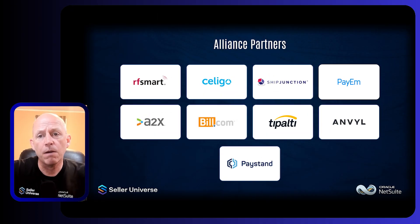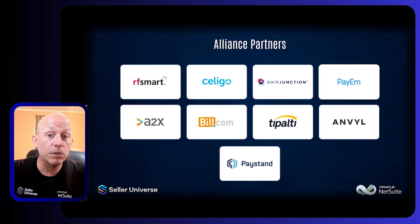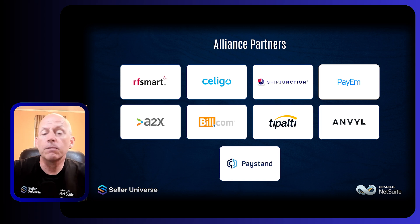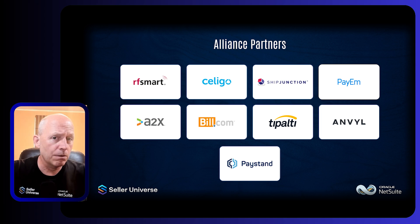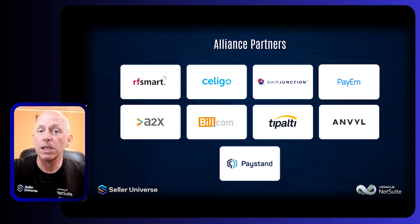Now that we've talked about the various types of integrations — whether one-directional or bi-directional data exchanges — and what Seller Universe can offer for services, I'd like to discuss some of our actual Alliance partners. We have A2X, which is automated e-commerce accounting; Build.com as well as Tipalti, which are both AP automations; and Ship Junction, which is very popular for shipping automation, especially if you're dealing with high volumes of shipments.